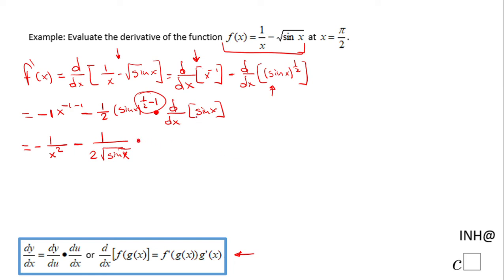Times the derivative of sine of x, like I said before, is cosine of x. I think we can do one more simplification, and we have negative 1 over x squared minus cosine of x over 2 square root of sine of x.